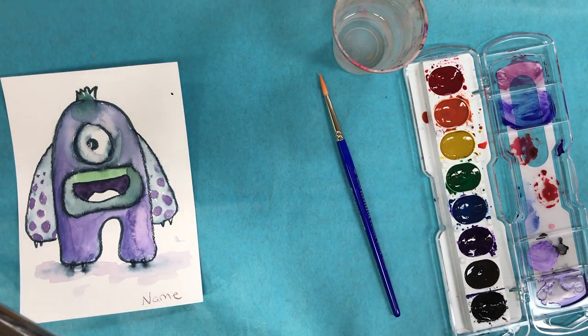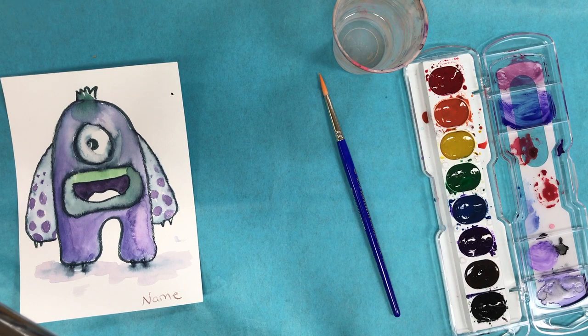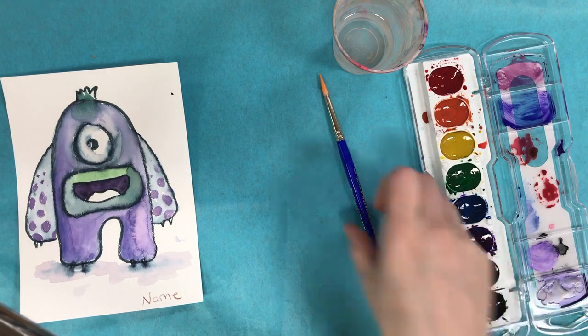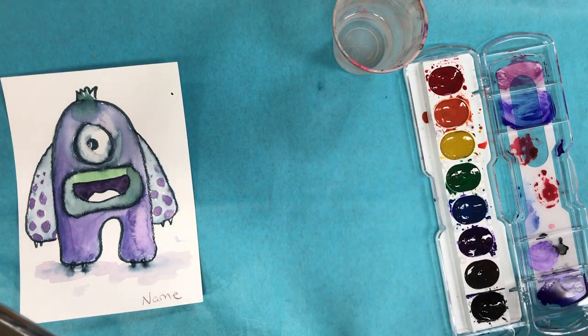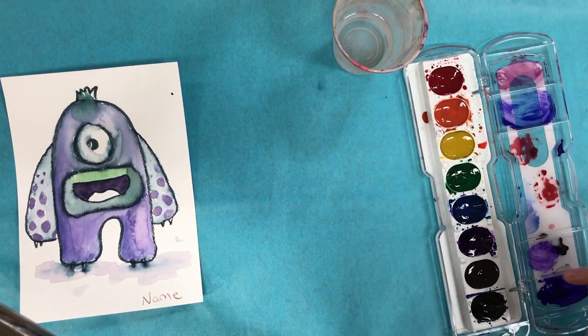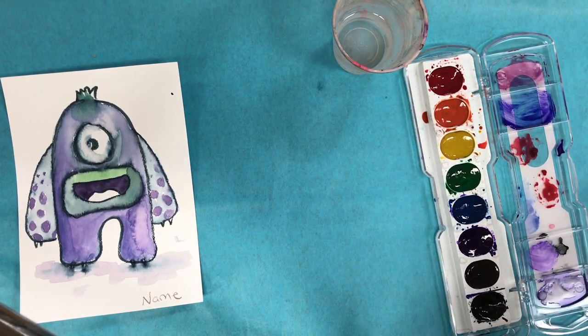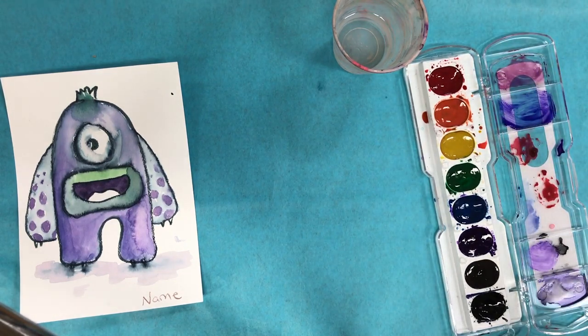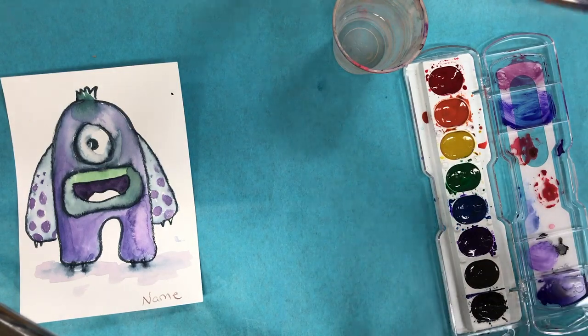We're going to learn about some different watercolor techniques to help us paint successfully with watercolor. Today I'm going to start off by showing you how to actually create the paint. These are semi-moist watercolors, meaning they don't take a lot of water to become paint, but you must use water to activate the pigments.